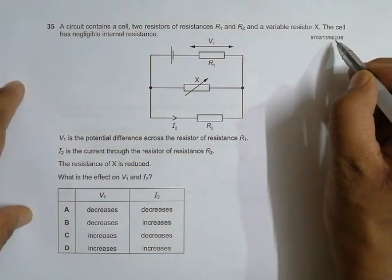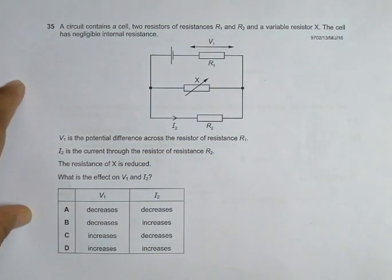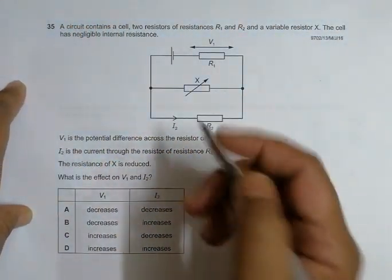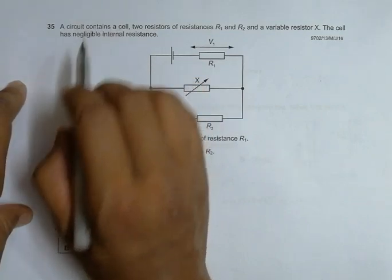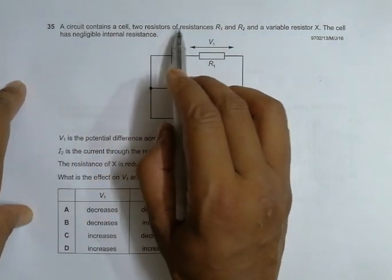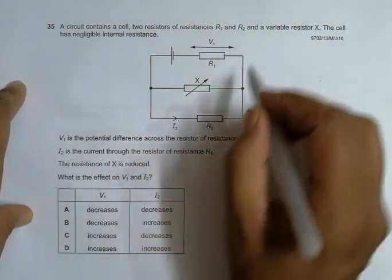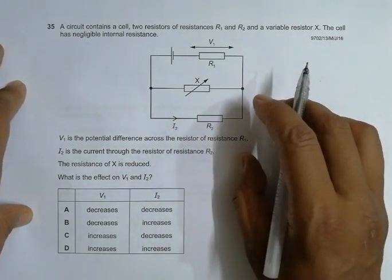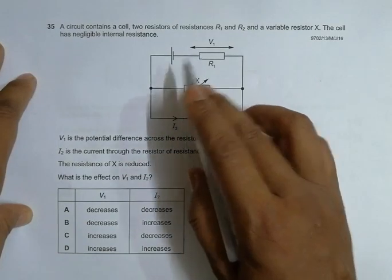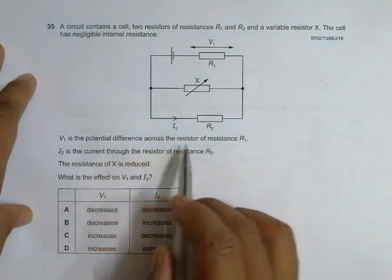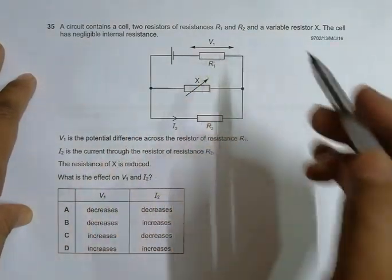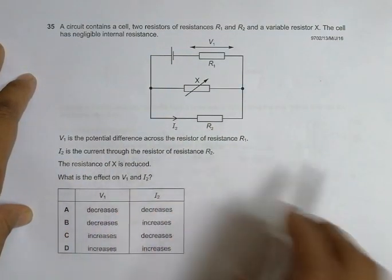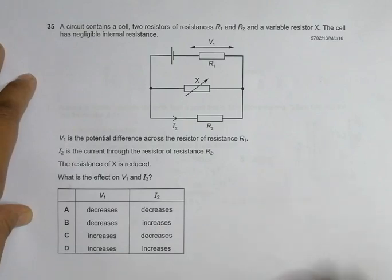Hello folks, this is 2016 May June paper 1-3 and the question number is 35. It is concerned with the chapter current electricity. So it says that a circuit consists of a cell, two resistors of resistances R1 and R2 and a variable resistor X. The cell has negligible internal resistance. The resistance of X is reduced.